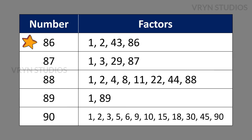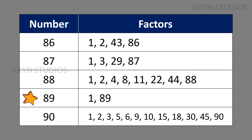The factors for the number 86 is 1, 2, 43 and 86. The factors for the number 87 is 1, 3, 29 and 87. The factors for the number 88 is 1, 2, 4, 8, 11, 22, 44 and 88. The factors for the number 89 is 1 and 89. The factors for the number 90 is 1, 2, 3, 5, 6, 9, 10, 15, 18, 30, 45 and 90.